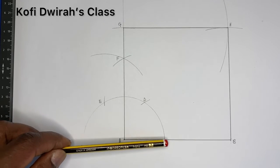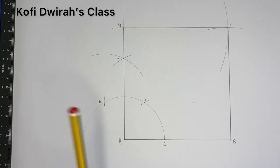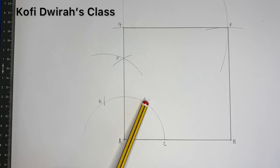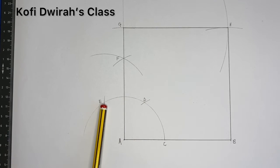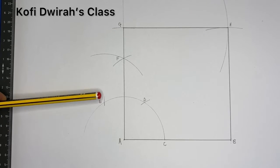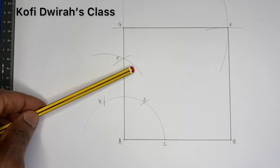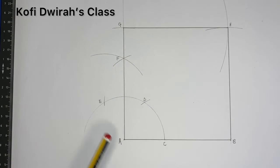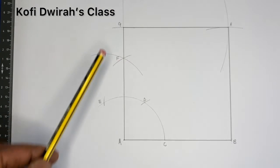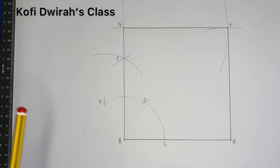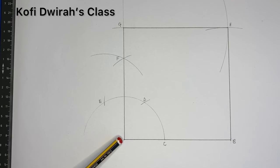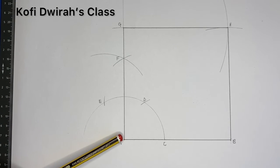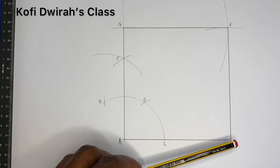Our radius gives us point C. Then you draw an arc. With the same radius at point C, you draw another arc to get D. At point D, you draw another arc with the same radius to get point E. Then at point E, you open your compass to any radius to get point F. You draw a straight line from point F through A to get another side of the square. The angle here is 90 degrees.